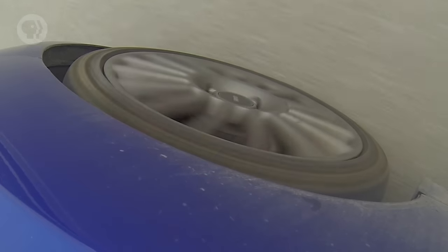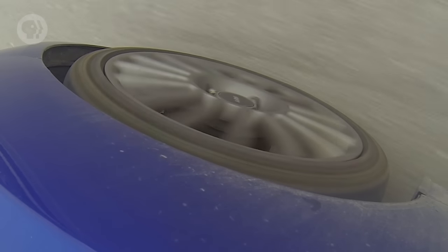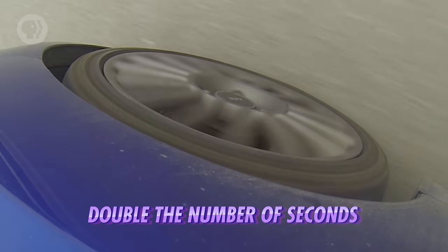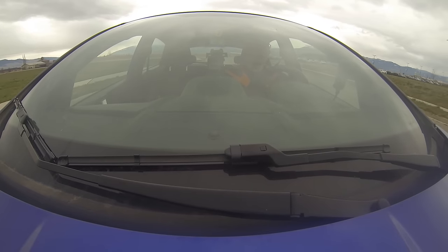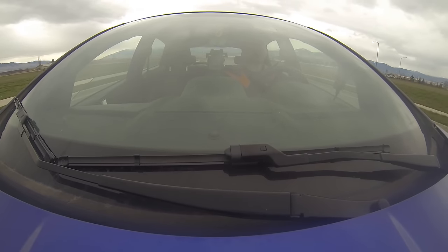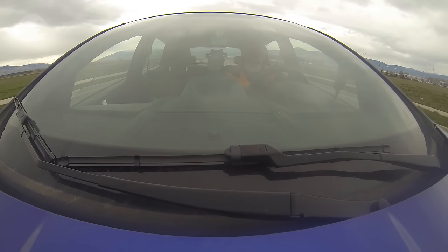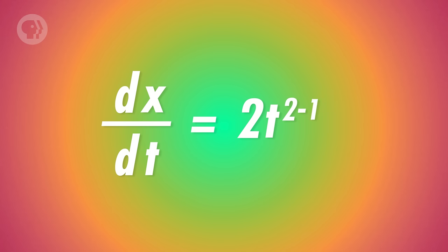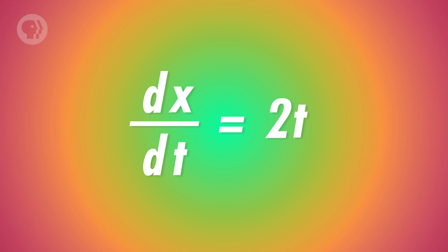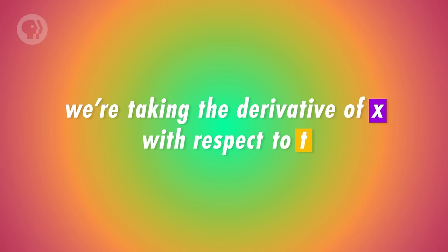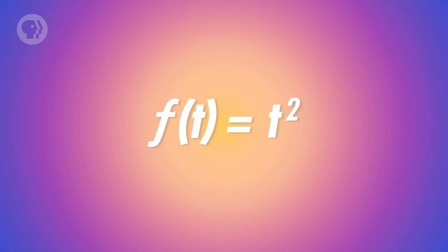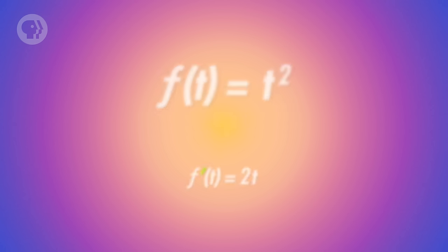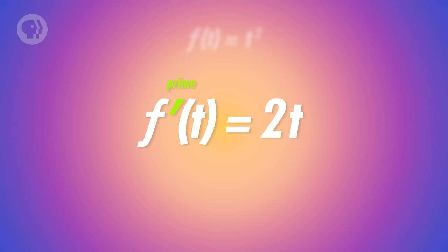Which means that no matter how many seconds you've got your foot on the gas, your velocity will be 2t – so double the number of seconds. After 5 seconds, you were going a modest 10 meters per second, but after 20 seconds, you were going a full 40 meters per second, which is not good. We'd write that as dx over dt equals 2t, where dx over dt is a way of saying we're taking the derivative of the part of the equation that involves t, or as a mathematician would put it, we're taking the derivative of x with respect to t. You'll also sometimes see this written as: if f of t equals t squared, then f prime of t equals 2t.